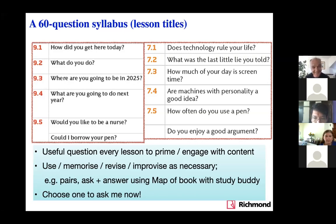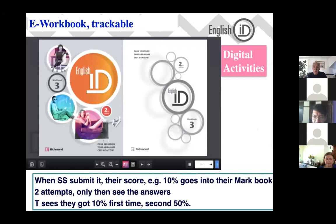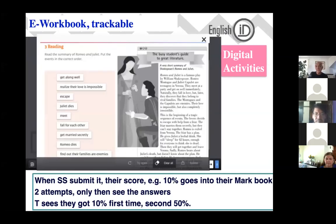I haven't got a clue — everything's been cancelled. Hopefully come to your continent and see all you wonderful people again, fingers crossed. There's also a trackable e-workbook — much more popular combined with online classes. The mark book shows some pages from the book; students get two attempts and only see answers after trying twice. If they got 10 the first time and 50 the second, that's their mark. This is wonderful for online teaching — why make up your own stuff if you've got all this readily available?